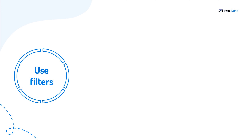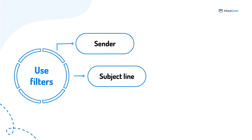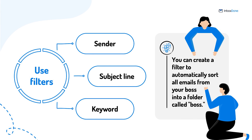Number one: use filters. Filters can help you automatically sort and categorize emails based on specific criteria such as sender, subject line, or keyword. You can create filters in most email clients to automatically categorize emails based on certain criteria. For example, you can create a filter to automatically sort all emails from your boss into a folder called "boss."